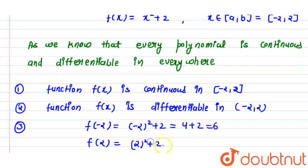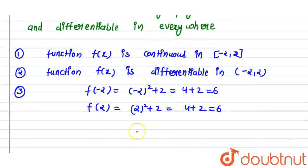Because it will be 2 square, 2 square is 4 plus 2 is 6. So here f of minus 2 is equal to f of 2.